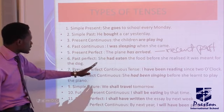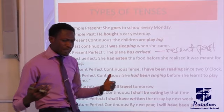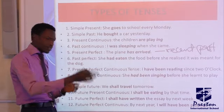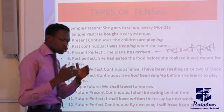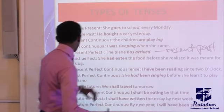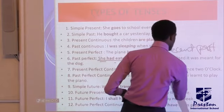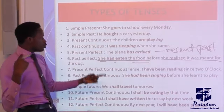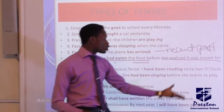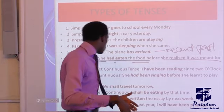The past perfect tense is used to show an action that was completed in the past before another action that was also completed in the past. For example, 'She had eaten the food before she realized it was made for the dog.' 'Had eaten' is one action completed in the past, and 'she realized' is another action also completed in the past. The difference: present perfect shows an action completed in the recent past, while past perfect shows an action completed in the past before another past action.